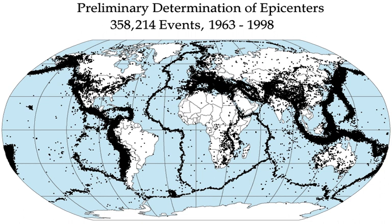Subsequent scales are also adjusted to have approximately the same numeric value within the limits of the scale. Although the mass media commonly reports earthquake magnitudes as Richter magnitude or Richter scale, standard practice by most seismological authorities is to express an earthquake's strength on the moment magnitude scale, which is based on the actual energy released by an earthquake.